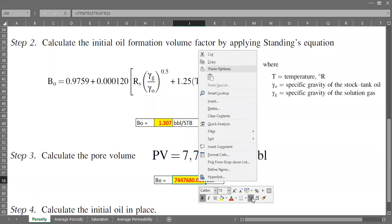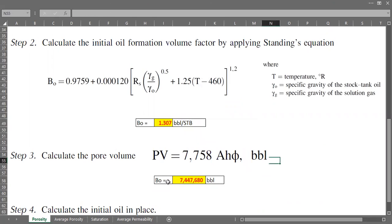So this is the result, the pore volume, the volume of the total pores, in barrels: 7,447,680.